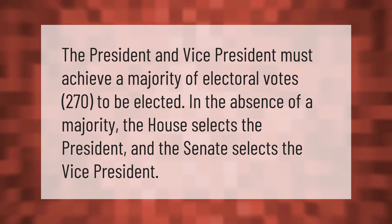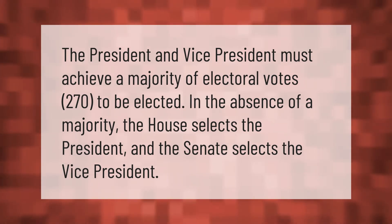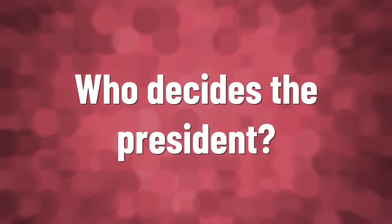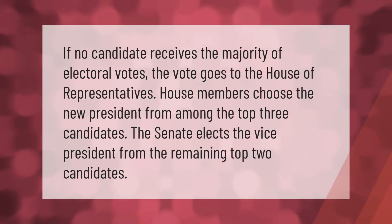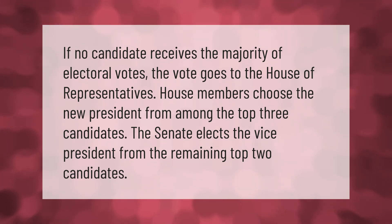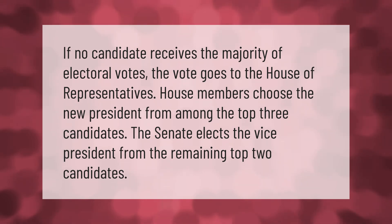In the absence of a majority, the house selects the president and the senate selects the vice president. If no candidate receives the majority of electoral votes, the vote goes to the house of representatives. House members choose the new president from among the top three candidates, and the senate elects the vice president from the remaining top two candidates.